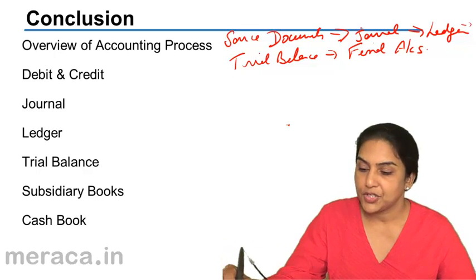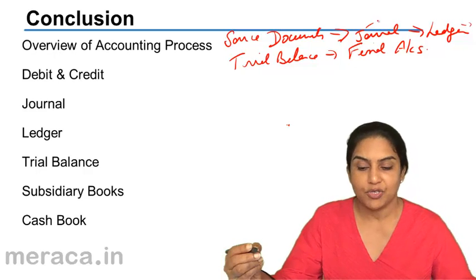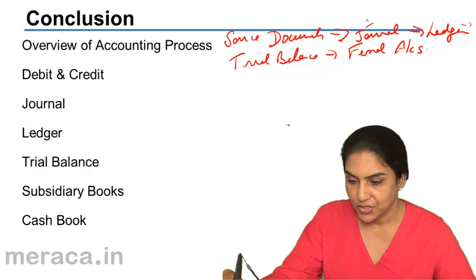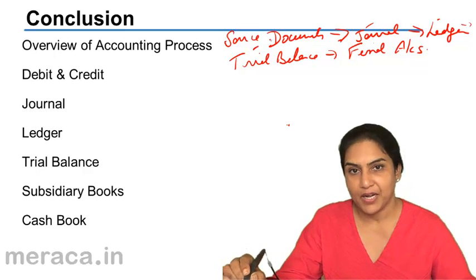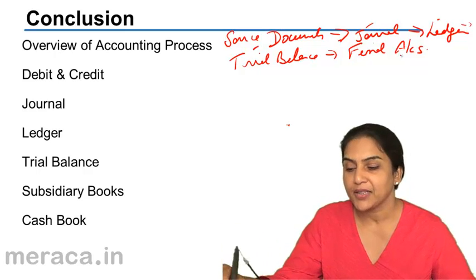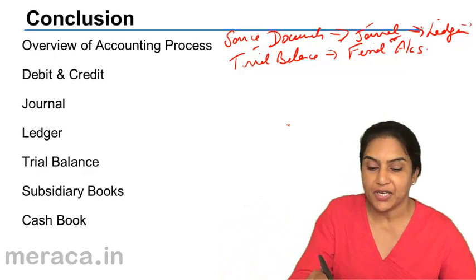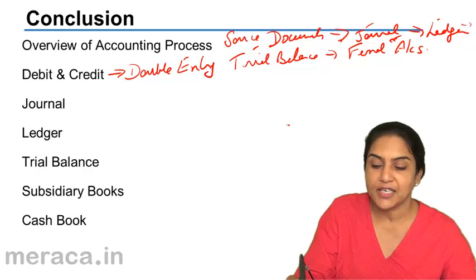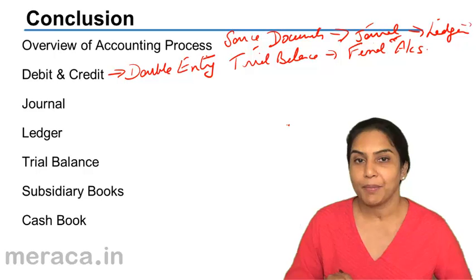The journal - if we define accounting as the art of recording in journal, classifying in ledger, and summarizing in trial balance, and interpreting the results thereof, recording was done in a significant manner. Those were the rules of debit and credit. Double entry. The significant manner was following the rules of double entry.